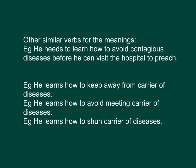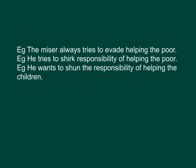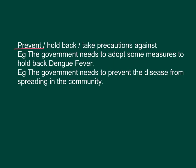Other similar verbs for 'avoid': for example, he needs to learn how to avoid contagious diseases. He learns how to keep away from carriers of diseases. He learns how to avoid meeting carriers of diseases. He learns how to shun carriers of diseases. A miser always tries to evade helping the poor — he tries to shirk the responsibility of helping the poor. He wants to shun the responsibility of helping the children. Similar verbs for 'prevent': hold back, take precautions against.